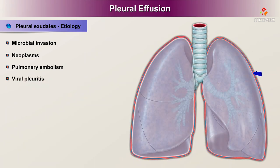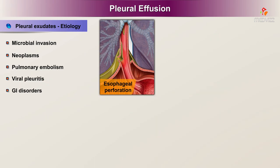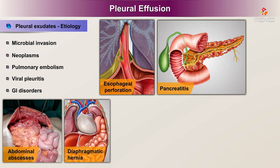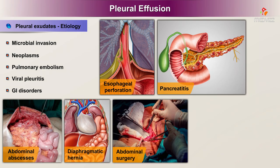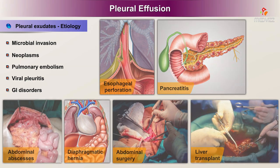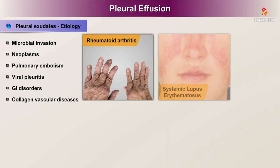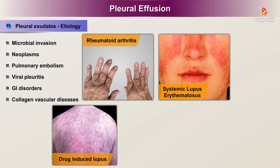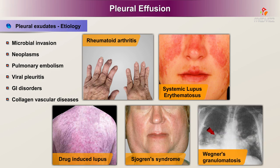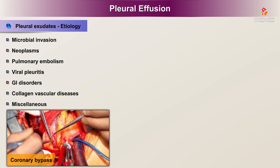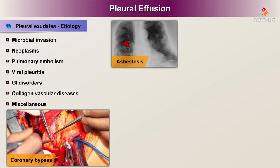Other exudate causes include viral pleuritis; gastrointestinal disorders such as esophageal perforation, pancreatitis, abdominal abscesses, diaphragmatic hernia, abdominal surgery, and liver transplant; collagen vascular diseases such as rheumatoid arthritis, systemic lupus erythematosus, drug-induced lupus, Sjogren's syndrome, and Wegener's granulomatosis; and miscellaneous causes such as coronary bypass, asbestosis, and sarcoidosis.